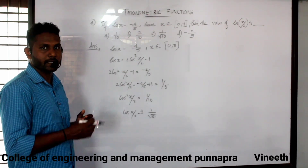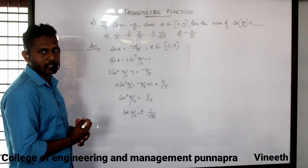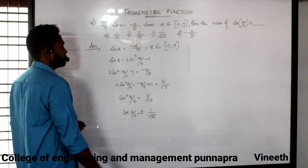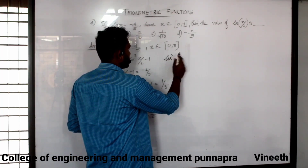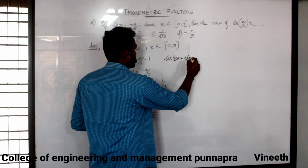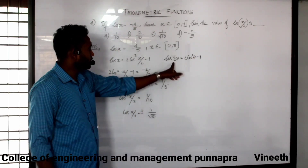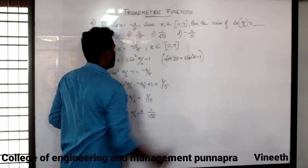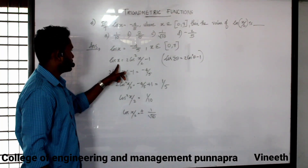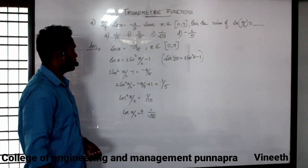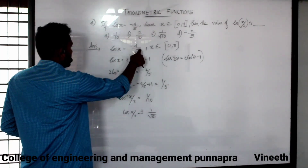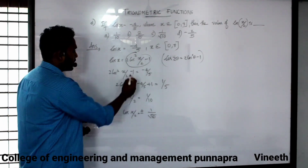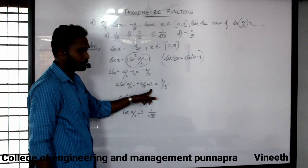Because cos 2theta is equal to 2 cos squared theta minus 1, we compare and see: cos x is equal to 2 cos squared(x/2) minus 1. Setting cos x equal to minus 4 by 5: 2 cos squared(x/2) minus 1 equals minus 4 by 5, so 2 cos squared(x/2) equals minus 4 by 5 plus 1 equals 1 by 5.